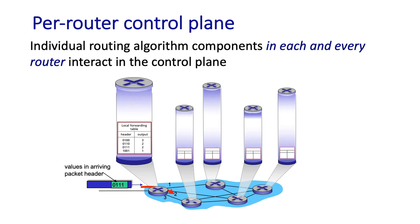The real question we should be asking is how do these local forwarding tables get computed? There are a number of ways to do this — for example, they could be entered by hand by a network manager into the table at a network router. And actually, that's how forwarding tables were initially configured way back in the day. But with hundreds of millions of routers spread all around the globe now, that's not possible.